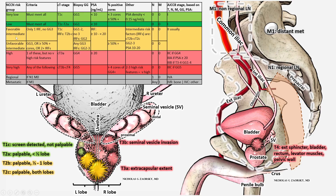The next NCCN risk group is intermediate risk disease. The risk refers to the risk of metastases — the risk of cancer cells being present in other parts of the body. Even though you might not see them on a scan, cancer cells may be flowing through blood vessels or lymphatic vessels. At very high risk, you have a high probability of this. At intermediate risk, there's some chance cancer cells have started to spread somewhere in the body but haven't landed anywhere — like blowing on a dandelion where the seeds have started to spread but haven't latched onto anything.